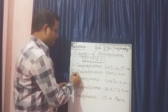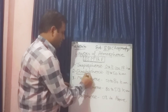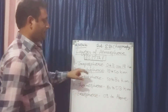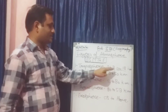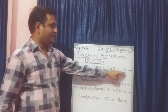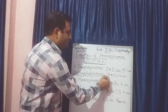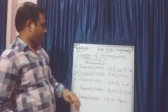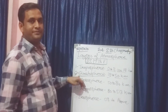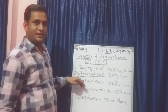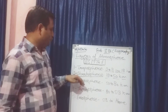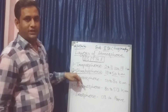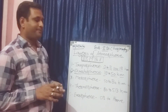After T, there comes S — Stratosphere. This is the second layer. It starts after 18 kilometers and extends from 18 to 50 kilometers in our atmosphere. In the Stratosphere, we have the most important ozone layer.